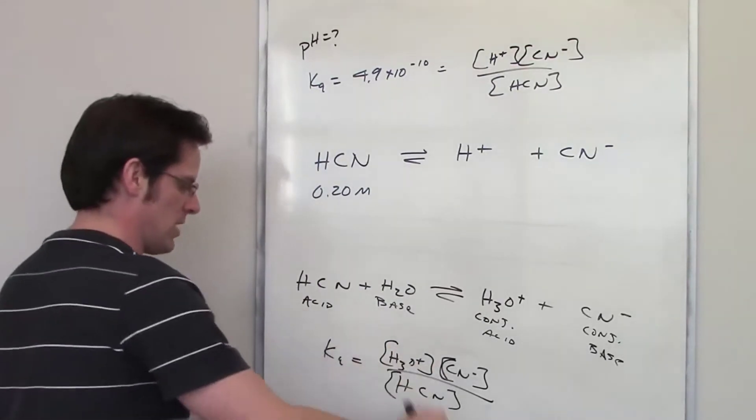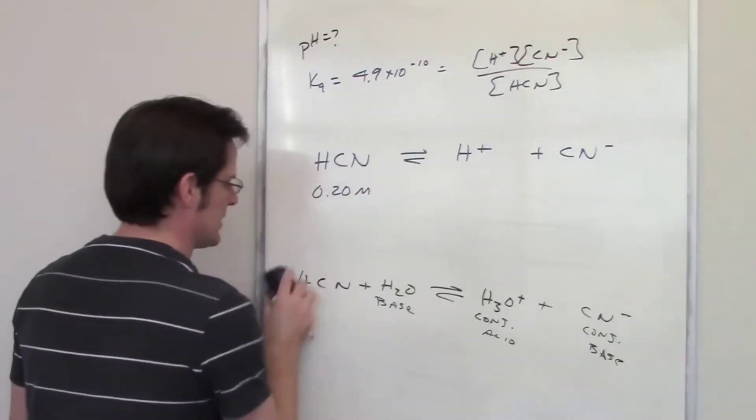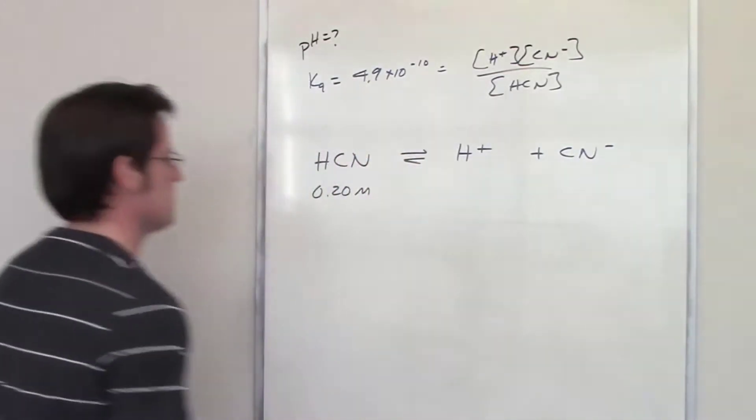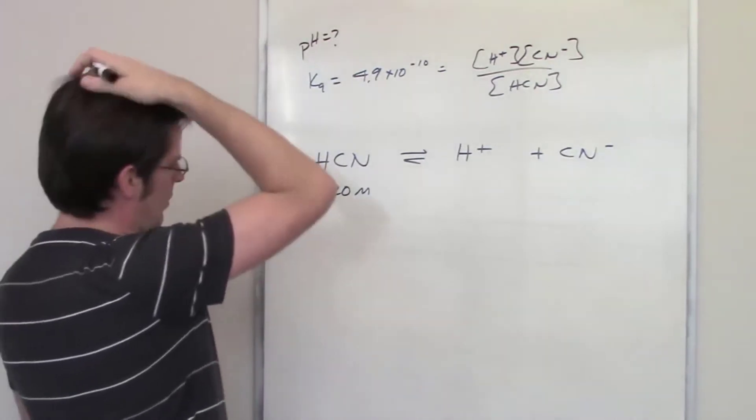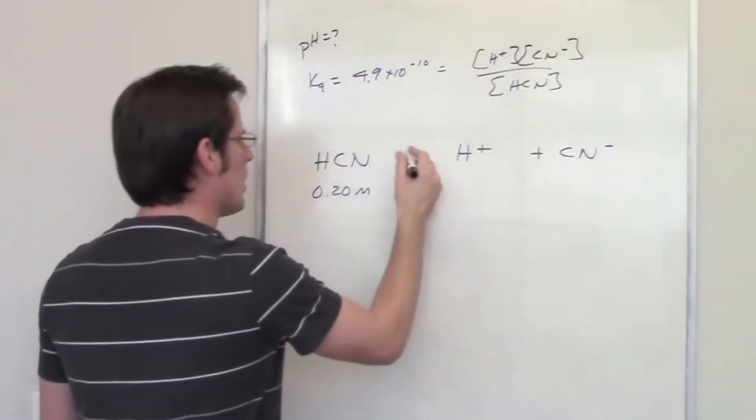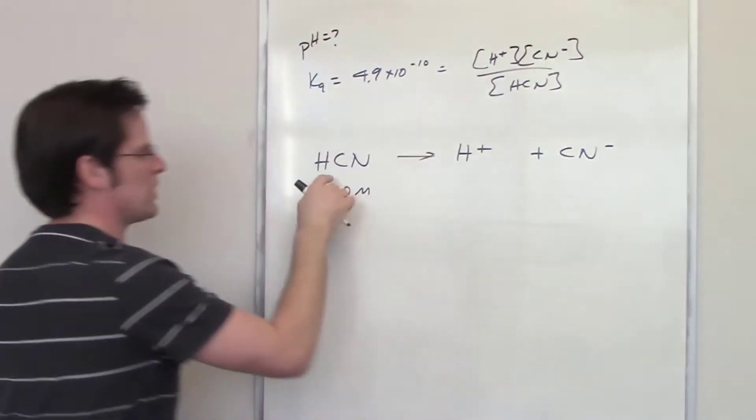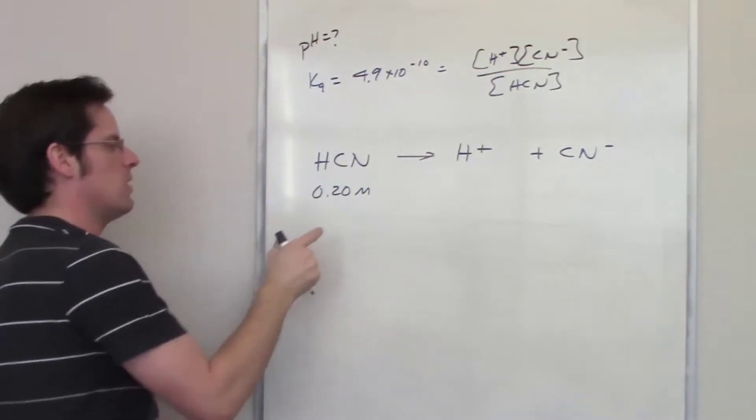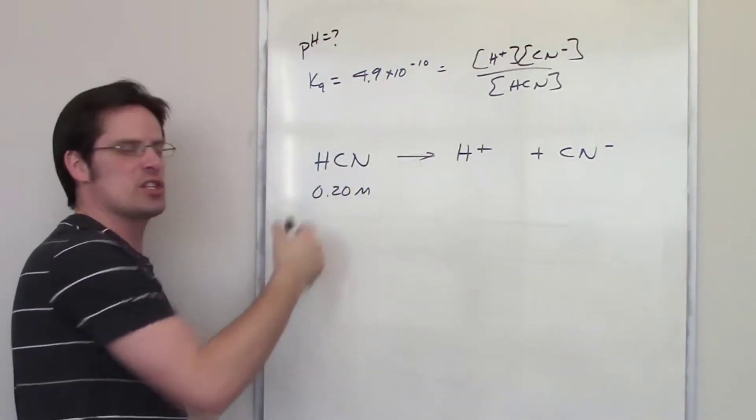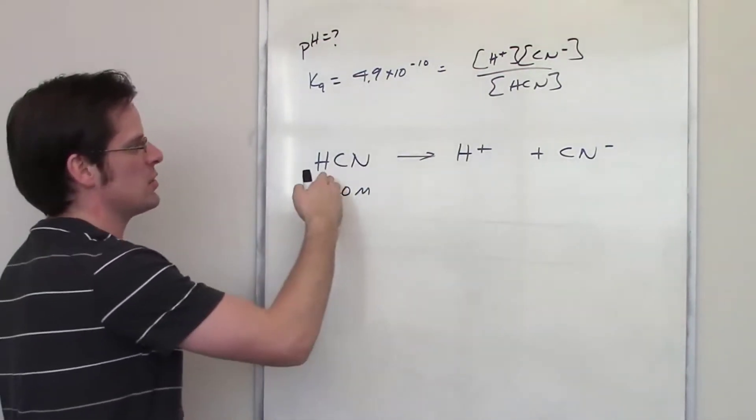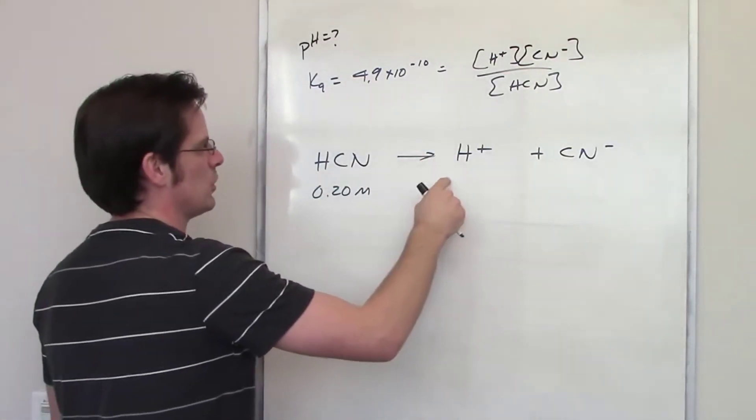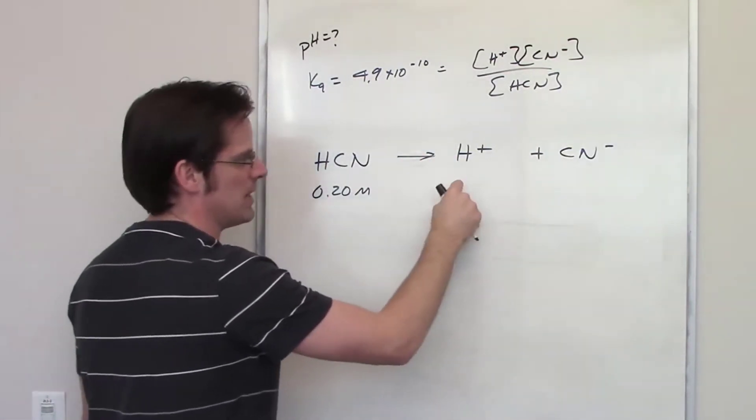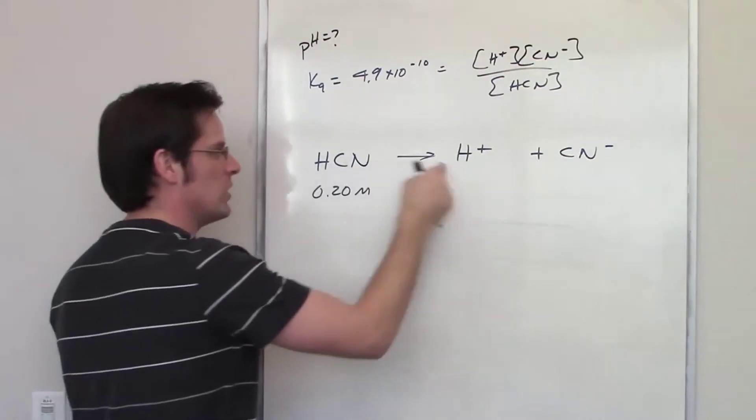So anyway, I just want to throw that all at you. I'll now erase this thing and we'll get back to the problem. So what in the world do I do? Well if this were a one-way arrow, in other words if this were a strong acid, then whatever this concentration was, as soon as the strong acid was thrown into water, it would dissociate virtually a hundred percent to release the exact same concentration of H plus and of CN minus because they're present in a one to one to one ratio.